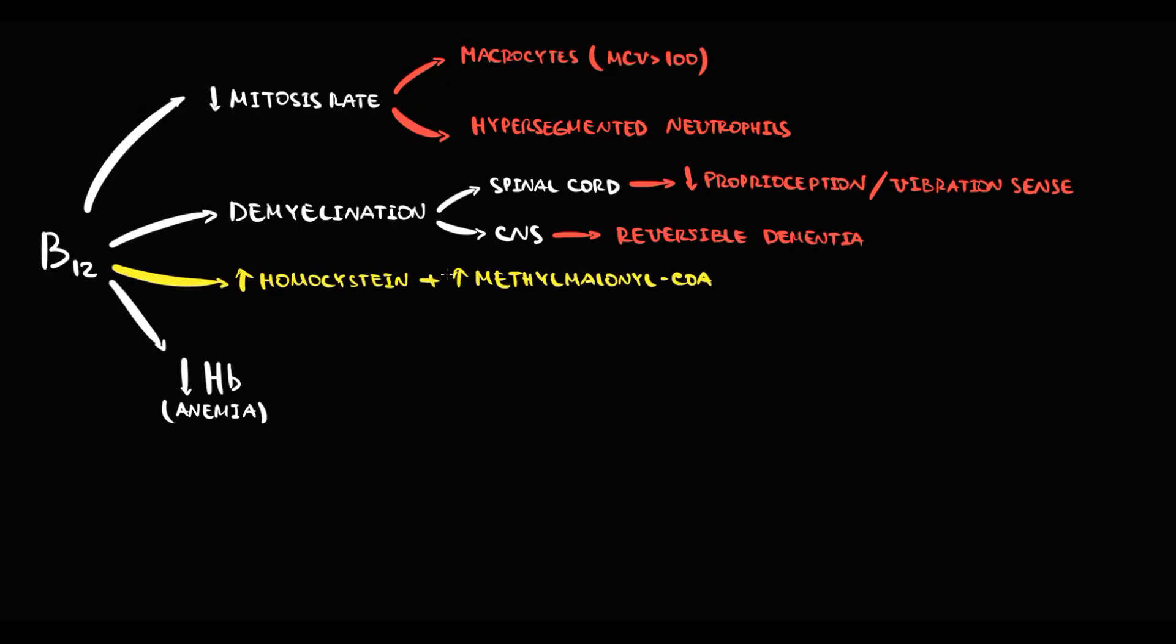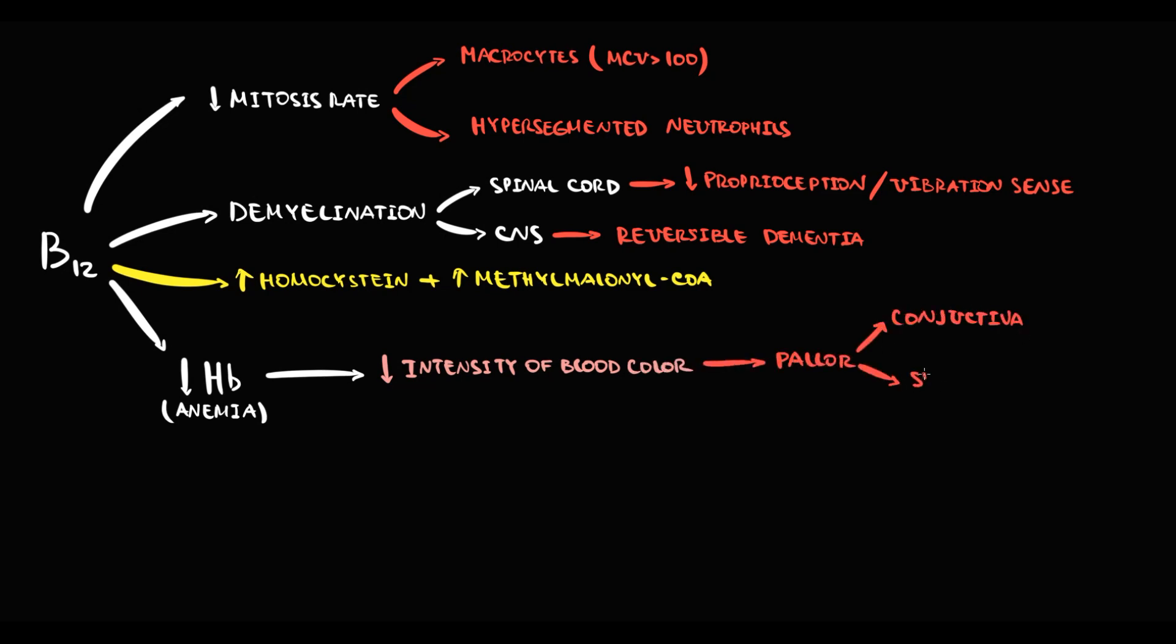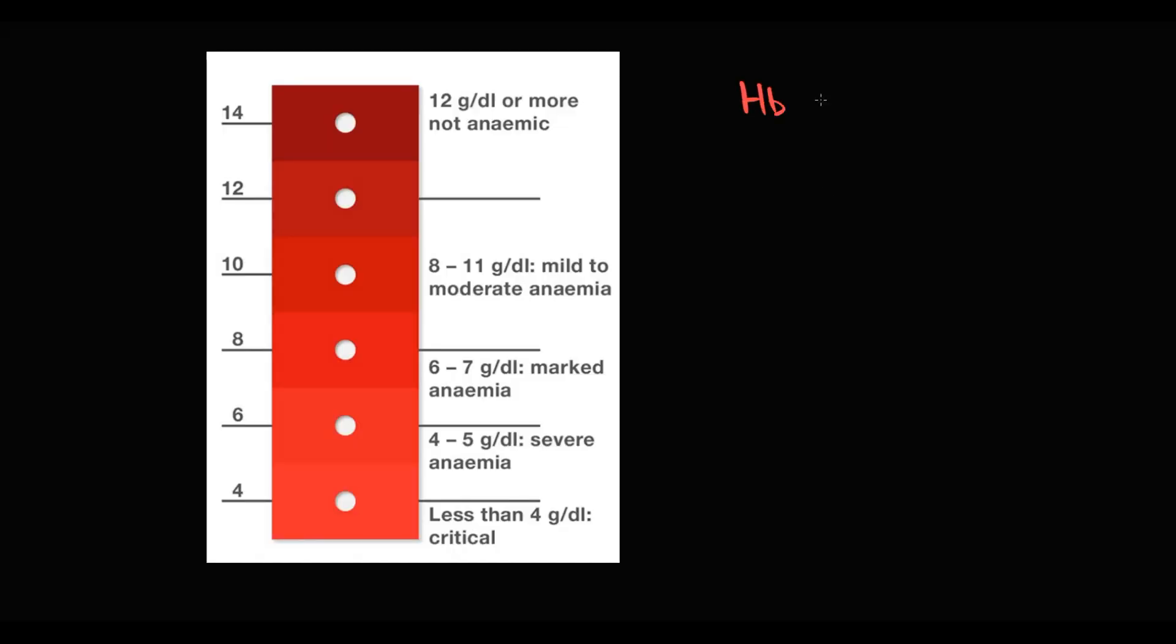But also, in addition to symptoms caused by vitamin B12 deficiency, there are symptoms caused by anemia itself. First of all, decreasing hemoglobin concentration will cause pale conjunctiva and pale skin. Because recall that blood has bright red color due to hemoglobin with oxygen. The higher the hemoglobin level, the more intense and bright is the red color of the blood. So with decreasing amount of hemoglobin, the color of the blood becomes less bright and less intense.